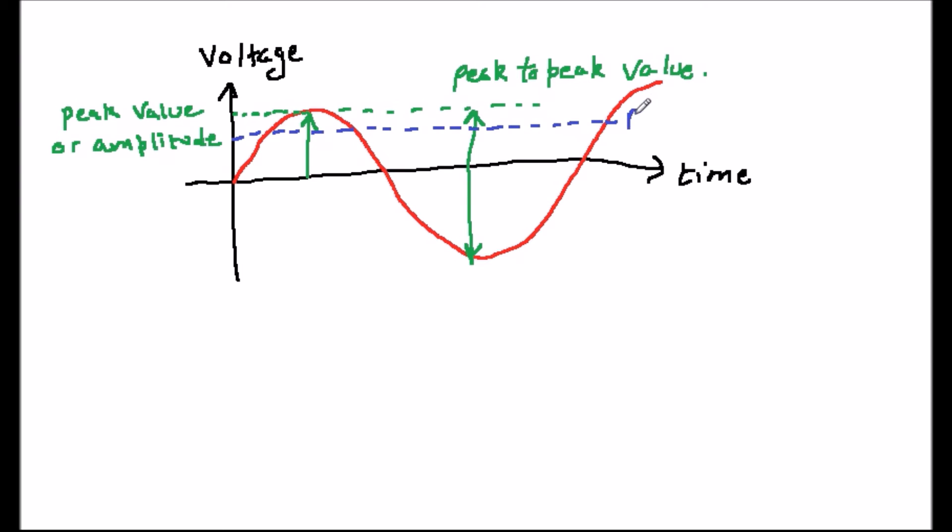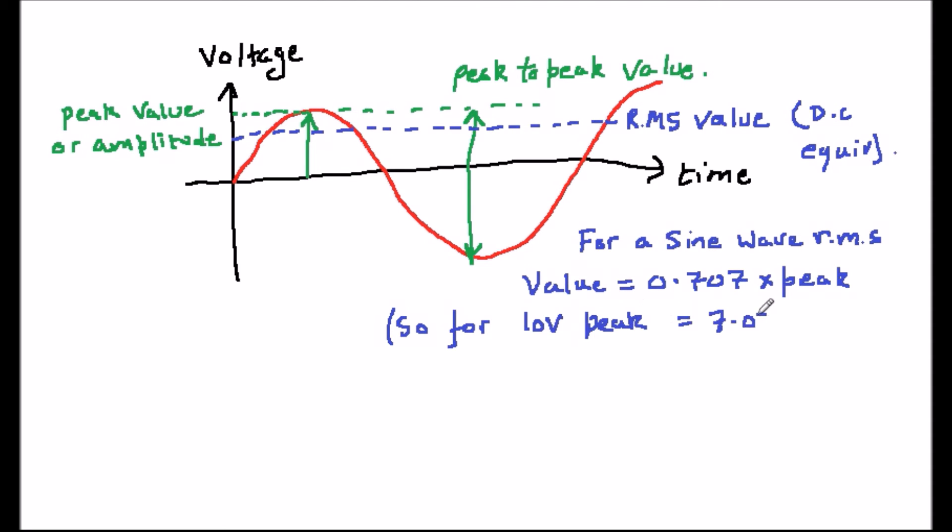A value which is of much more significance is called the root mean square or RMS value. This is the equivalent DC value for an AC signal. To illustrate what this means, consider an electric fire supplied by a battery. What value of AC supply would cause the fire to emit the same amount of heat as the DC battery? This is what the RMS tells us.